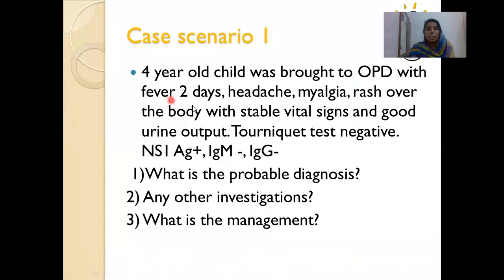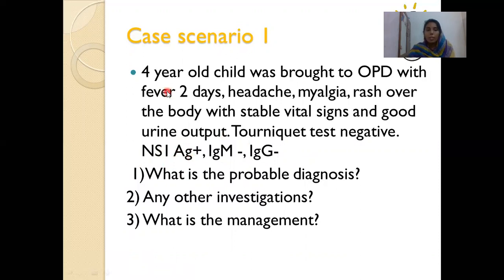Case 1: A 4-year-old child brought to OPD with fever for 2 days, headache, myalgia, rash, stable vital signs, good urine output. Tourniquet test negative, NS1 antigen positive, IgM negative, IgG negative — so previous infection rolled out, this is a first-time infection. This is dengue fever without warning signs in the febrile phase.